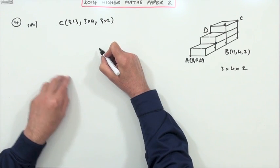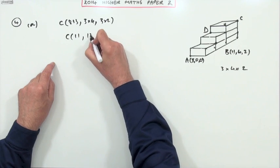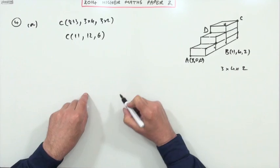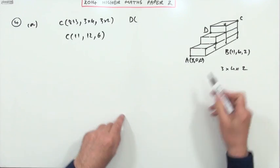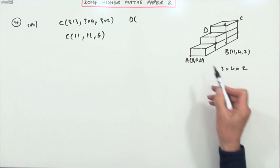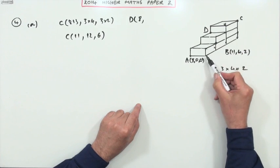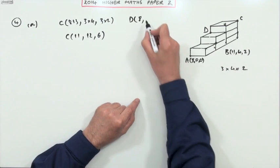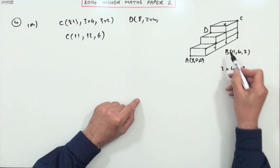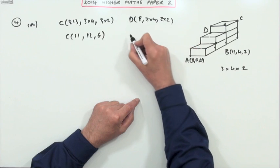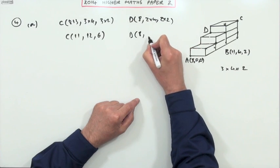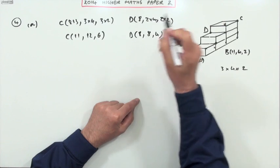Which means C is the point (11, 12, 6). Similarly for D. Now D's on the same face, the left hand face as A, so I'll start with an 8. It is 2 boxes back, so it's 2 lots of 4, and 2 boxes up, so it's 2 lots of 2. So D's the point (8, 8, 4).